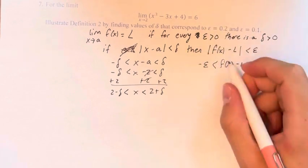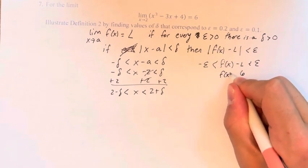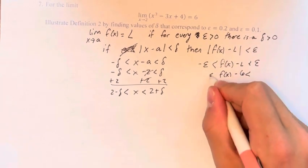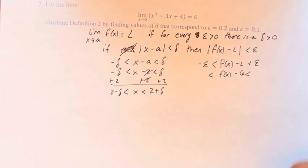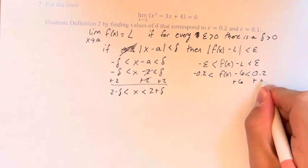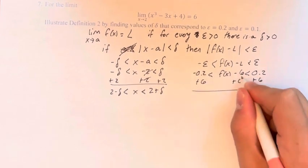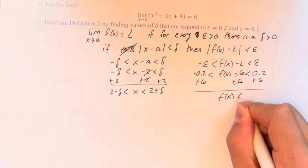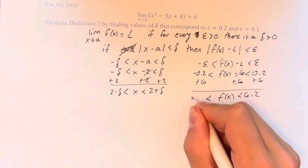L here is the value of the limit, 6, so f of x minus 6 is less than... First thing we want to test is 0.2, and this would be negative 0.2. Adding 6 to both sides, f of x is less than 6.2 and greater than 5.8.